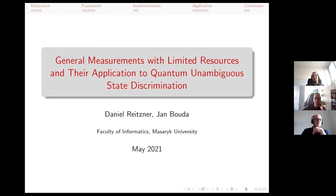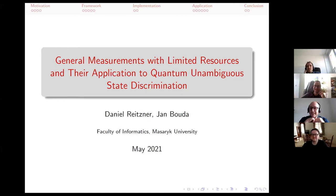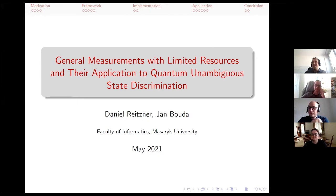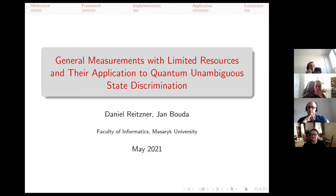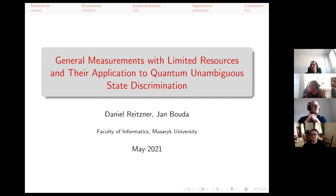Welcome everybody. In this week's seminar we have the pleasure to host Daniel Reitzner and Jan Wuda from Masaryk University. Daniel is also from the Institute of Physics, Polish Academy of Science — Slovak, actually. They are experts on foundations of quantum mechanics, especially incompatibility theory, joint measurability, state discrimination. Today Daniel will be telling us how to efficiently implement generalized quantum measurements with limited resources and application to unambiguous state discrimination.